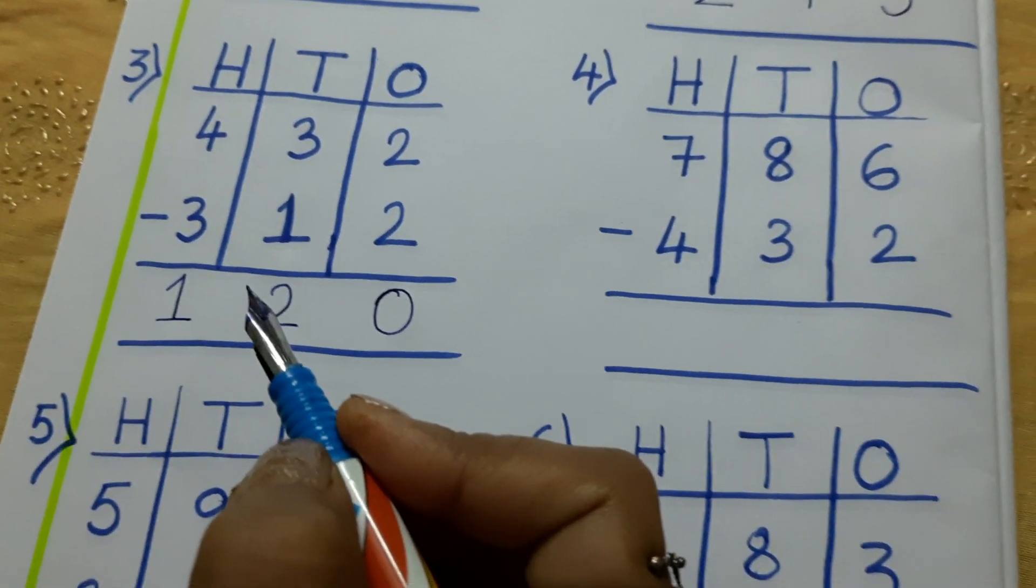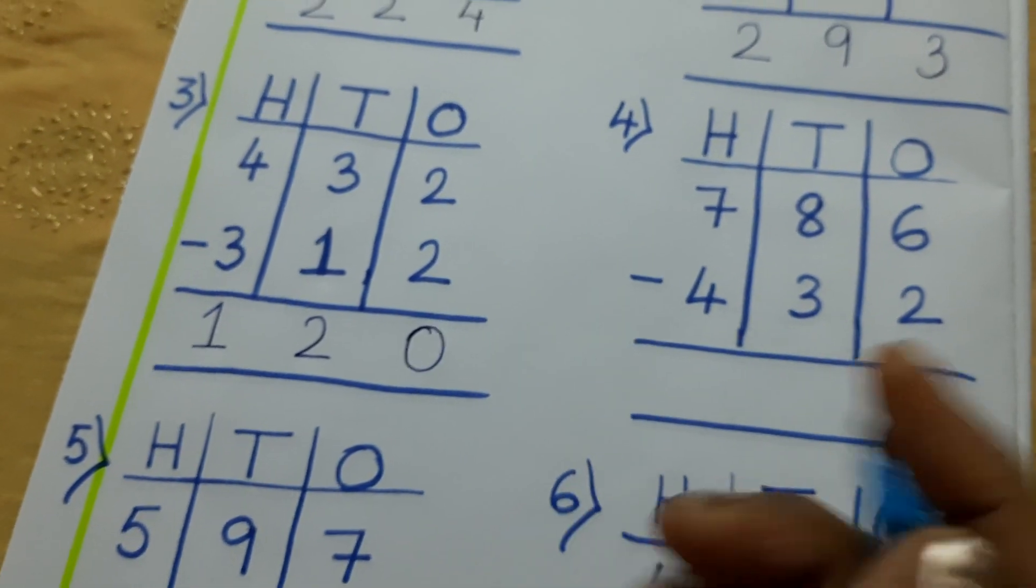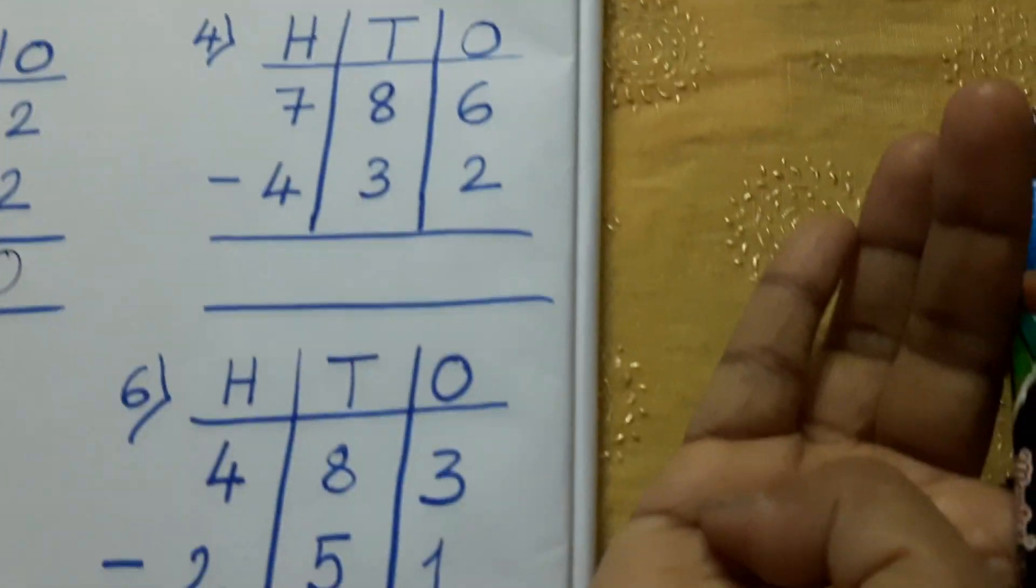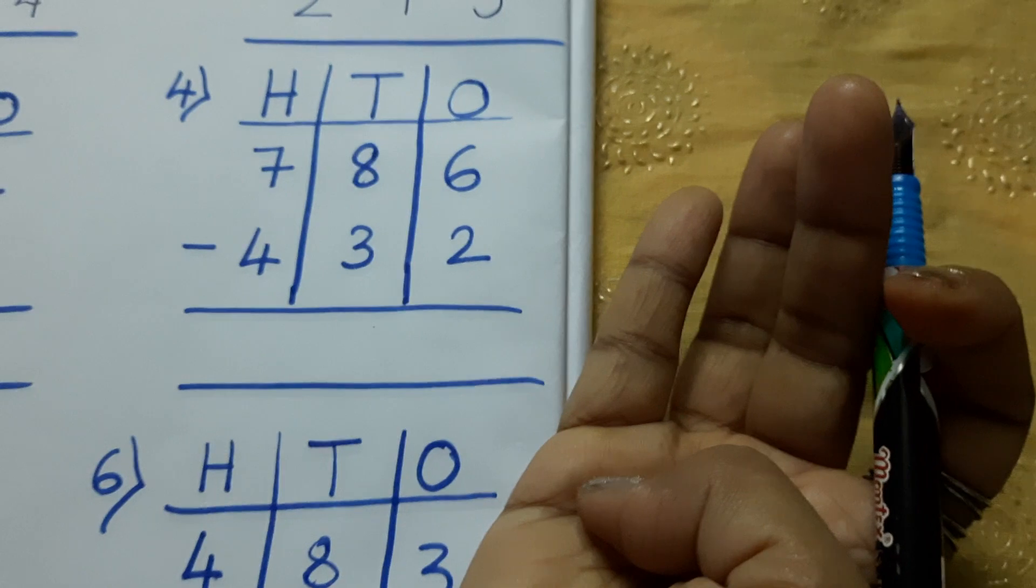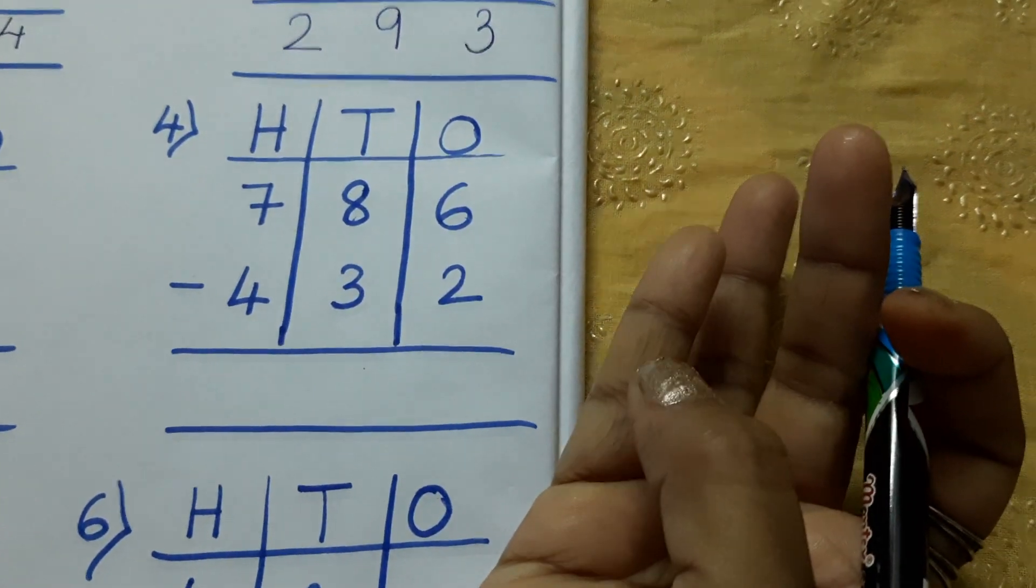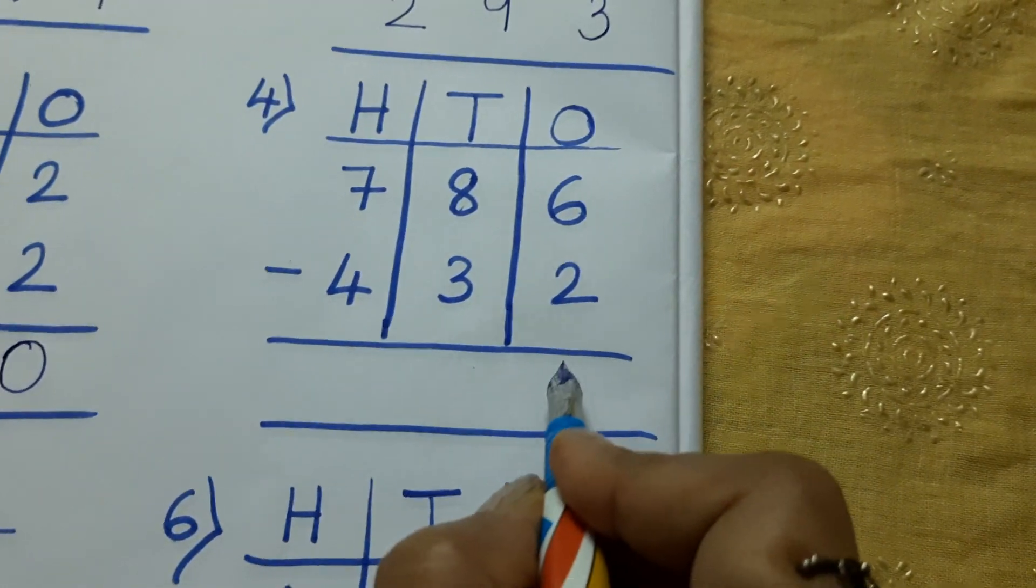If the number is not bigger, you can do in your mind also. So, 6 minus 2. Take the 2 here. Then count up to 6. 3, 4, 5, 6. Answer is 4.